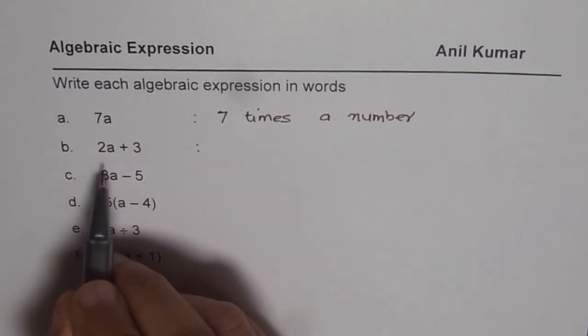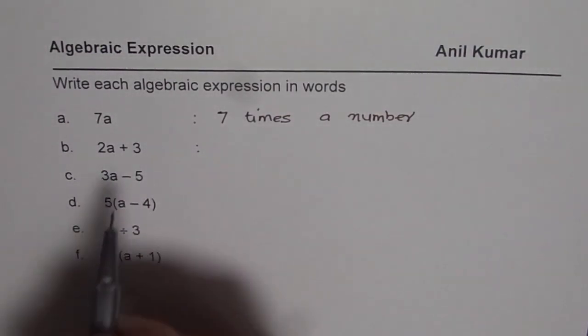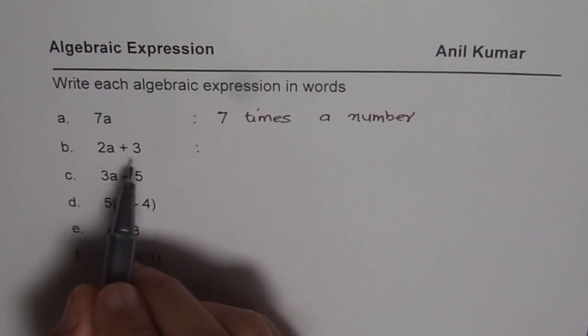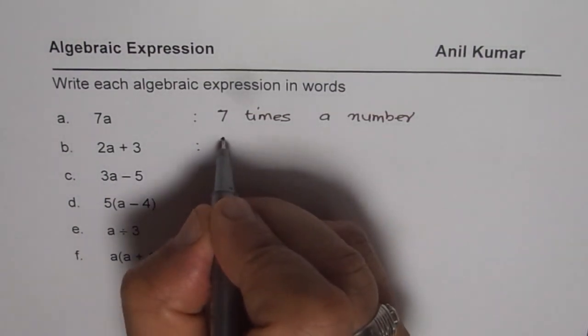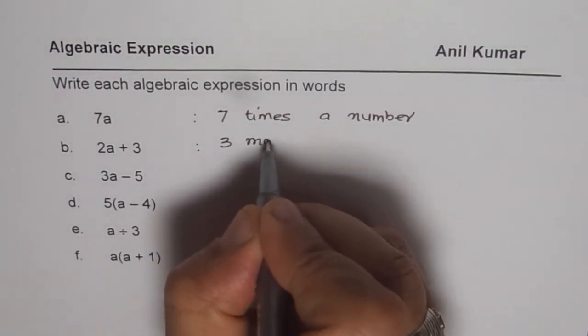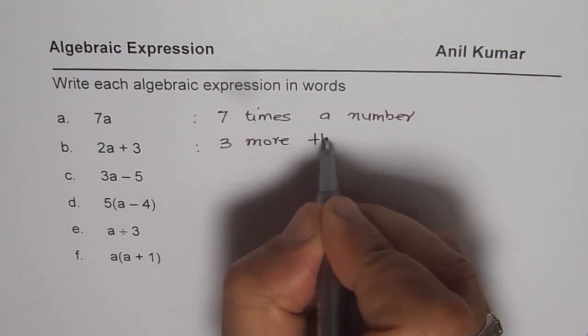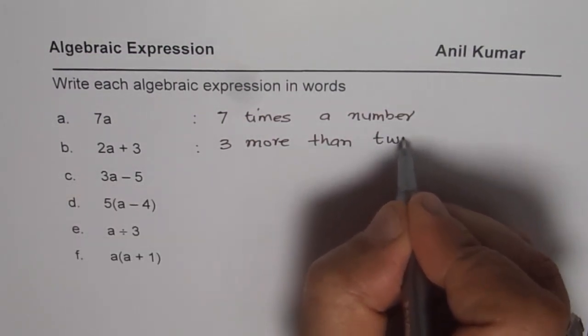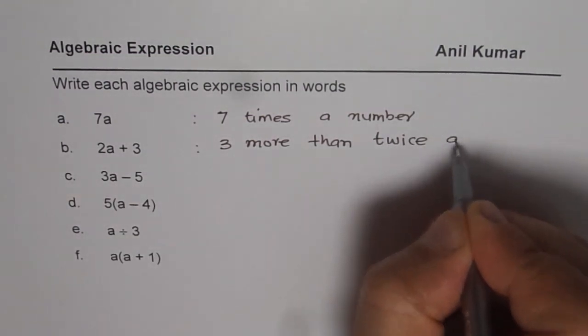Now the next one is 2a plus 3, which we could write as twice a number add 3, but a better way of writing is 3 more than twice a number.